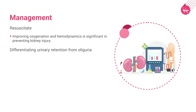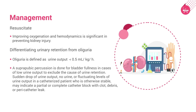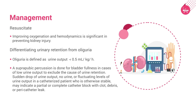Differentiating urinary retention from oliguria. Oliguria is defined as less than 0.5 milliliter per kilogram urine output for at least two hours. Suprapubic percussion is done for bladder fullness in cases of low urine output to exclude urinary retention. A sudden drop, absence, or fluctuating levels of urine output in a catheterized patient who is otherwise stable may indicate a partial or complete catheter block with clot, debris, or pericatheter leak. Ascertain this by physical examination, bladder wash, or replacing the catheter. Bedside ultrasonography differentiates retention from oliguria and confirms catheter position.